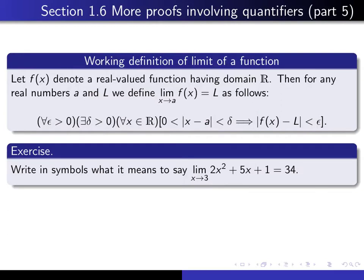Here's a simple exercise for you to practice. Write down in symbols what it means to say that the limit, as x goes to 3, of 2x squared plus 5x plus 1 is equal to 34. Essentially, all you're doing is copying the definition down again, but being very specific about what a is, what f of x is, and what l is. Write this down, but be very specific.